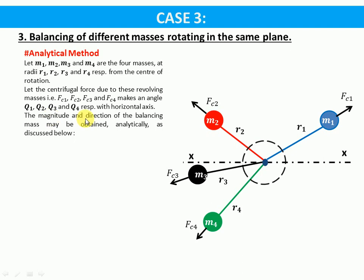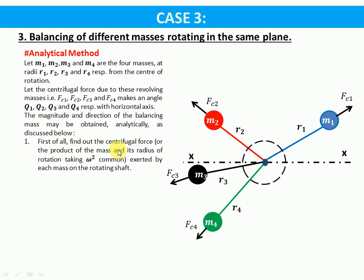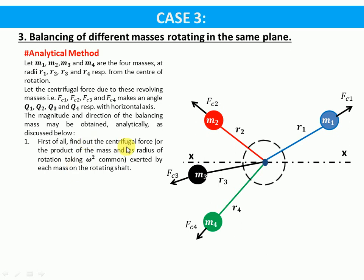The magnitude and direction of the balancing mass may be obtained analytically as follows. First, resolve all these forces in the horizontal plane, then resolve all these forces in the vertical plane. Find out the centrifugal force, or the product of mass and its radius of rotation, taking omega squared common as the magnitude of centrifugal force is m·r·omega².